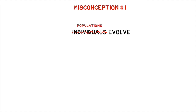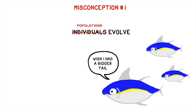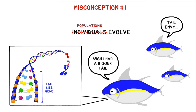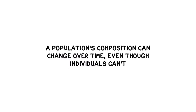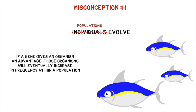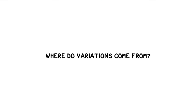This brings us to misconception number one: individuals don't evolve, populations evolve. Individual organisms retain the same genes throughout their lives, generally speaking. They can't simply swap out their genes for a more favorable set whenever they feel like it. A population, however, can change its composition over time. If a gene gives certain organisms an advantage, those organisms will eventually increase in frequency. This begs the question of how and why these variations and traits arise to begin with if they can't be swapped out at will.